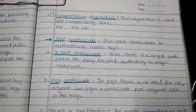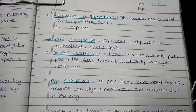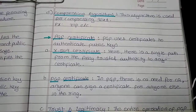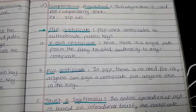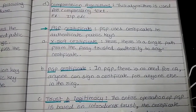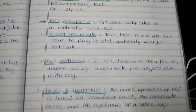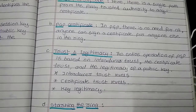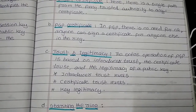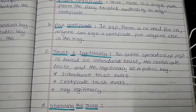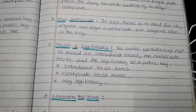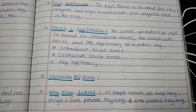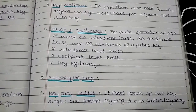The PGP certificate is used for authenticating the public key. The first type is the X.509 certificate, which represents a single path from a fully trusted authority to any certificate. The second type is the PGP certificate, where there is no need for a certificate authority — anybody can sign a certificate for anyone else in the ring. Trust and legitimacy in PGP are based on introducer trust levels, certificate trust levels, and key legitimacy. Finally, PGP maintains a keyring table that keeps track of two keyrings: the private keyring and the public keyring. That's all about PGP or Pretty Good Privacy.